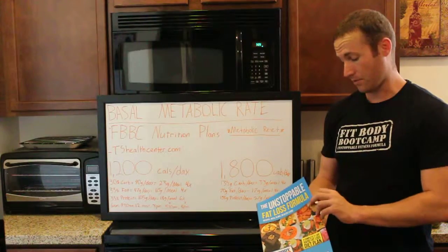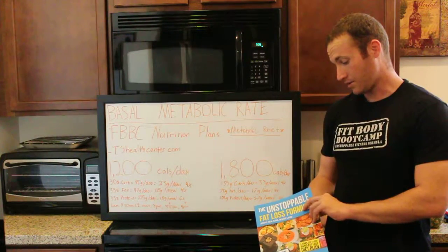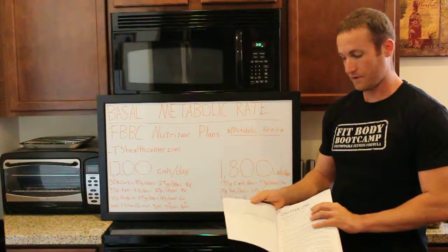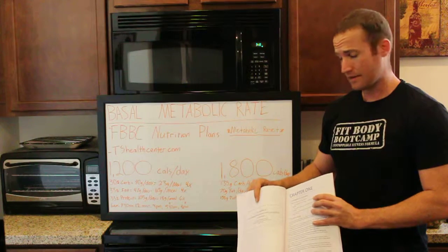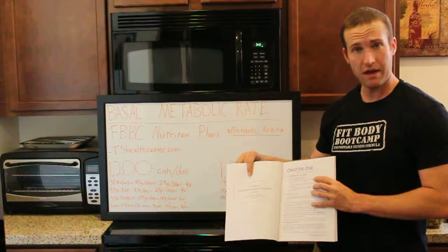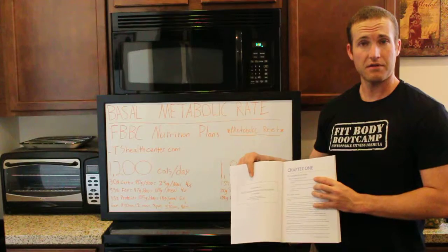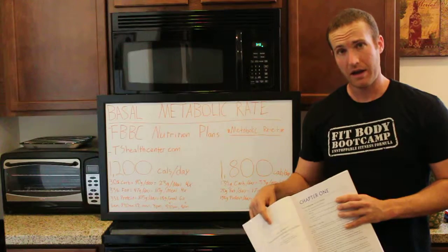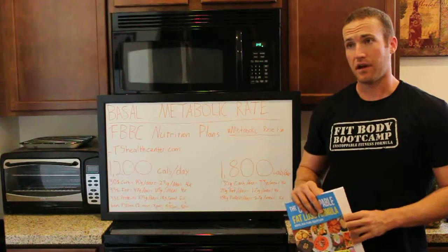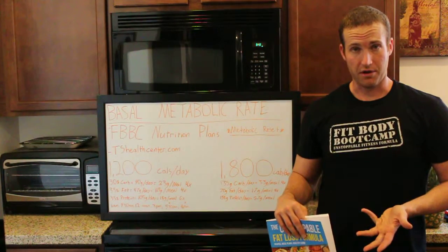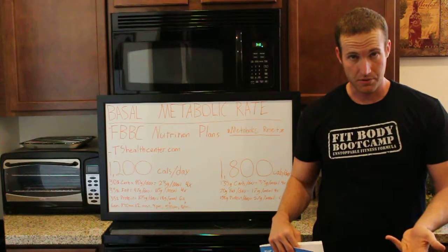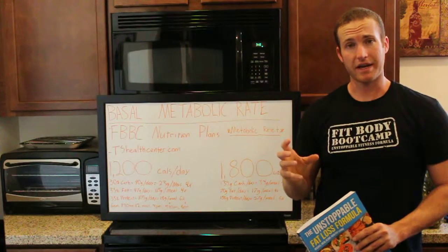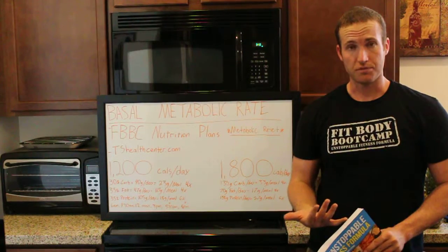When you signed up for one of the long-term programs, you should have received this blue book here — the Unstoppable Fat Loss Formula. If you go to page six, you're going to see that there's a web page to go to. This will figure out how many calories you should be taking in. It has a nice calculator in there so you can figure out your basal metabolic rate, including the activity factor since you're doing boot camp, and how many calories you should be taking in.